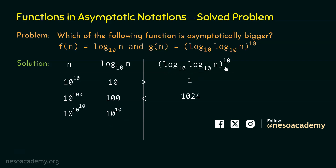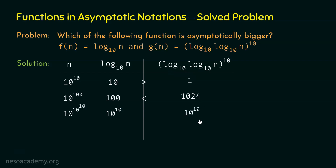So we get 10, which means we get 10^10 as the result for g(n). We can observe that at this point, f(n) is equal to g(n).